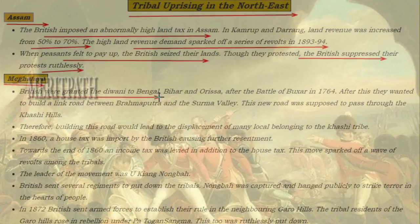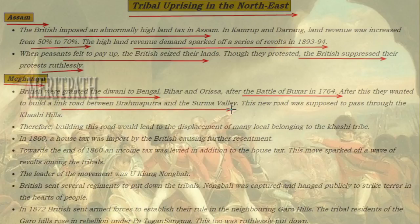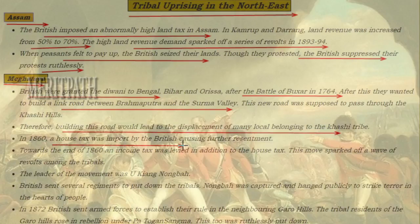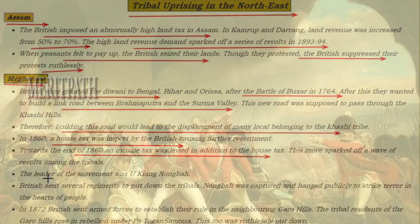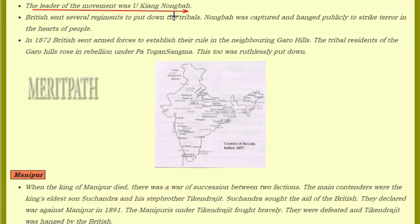In Meghalaya, the British had granted the Diwani to Bengal, Bihar, and Orissa after the Battle of Buxar in 1764. The British wanted to build a road link between the Brahmaputra and Surma valleys. This road passed through the Khasi hills, affecting the tribal people living there. In 1860, the British imposed a house tax, further sparking resistance. They also introduced an income tax. This led to a revolt by the tribal people, led by Uking Nongbah. The British sent several regiments to put down the tribals, and Nongbah was captured and hanged publicly to strike terror in the hearts of the people.